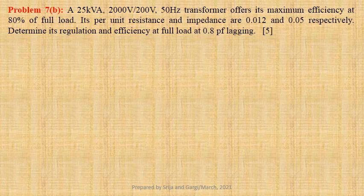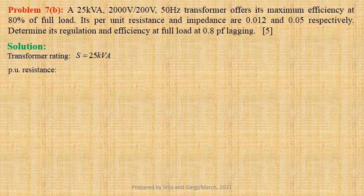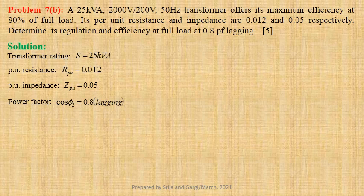Problem number 7B: A 25 kilovolt-ampere, 2000 volt by 200 volt, 50 hertz transformer has maximum efficiency at 80% of full load. Per unit resistance R per unit equals 0.012, and per unit impedance Z per unit equals 0.05. We need to find the voltage regulation and full load efficiency at 0.8 lagging power factor. Given: S equals 25 kVA, R per unit equals 0.012, Z per unit equals 0.05, cos φ₂ equals 0.8 lagging, so sin φ₂ equals 0.6.